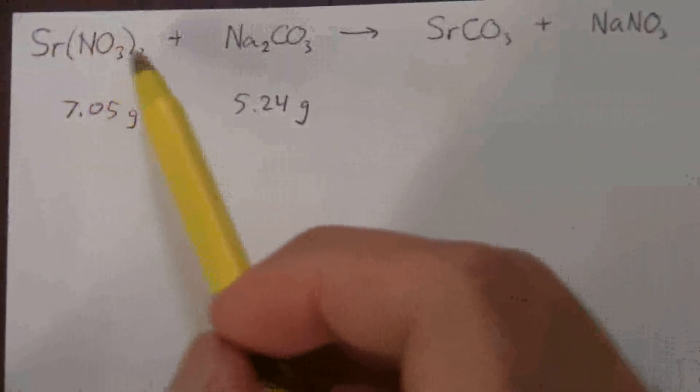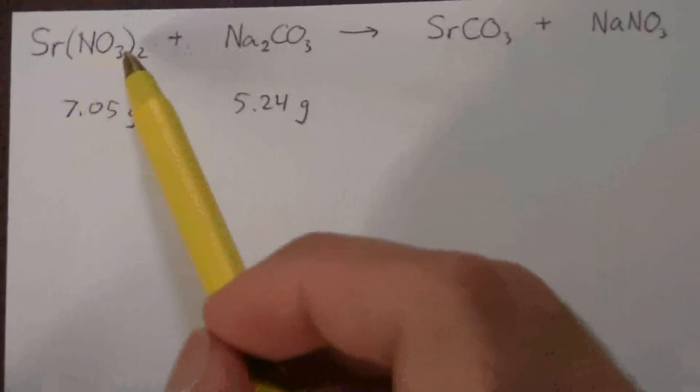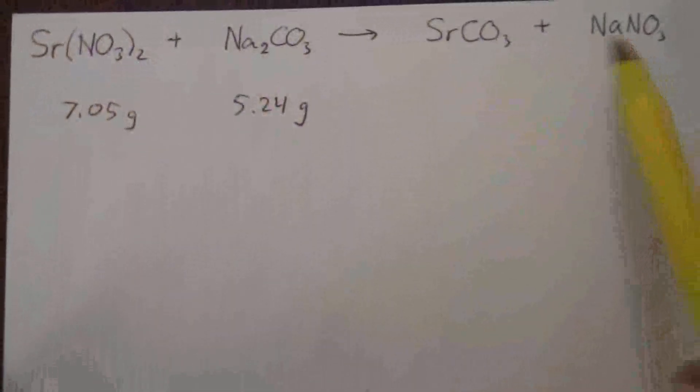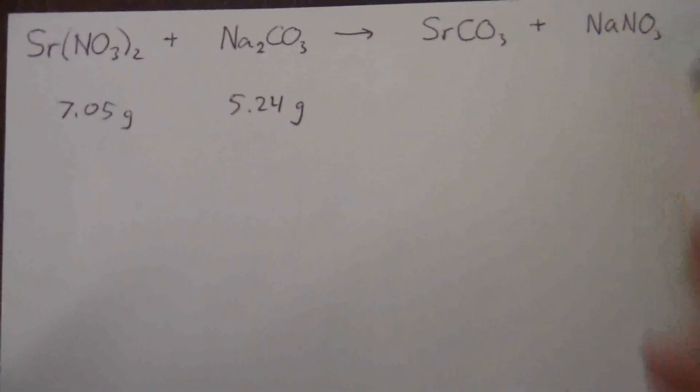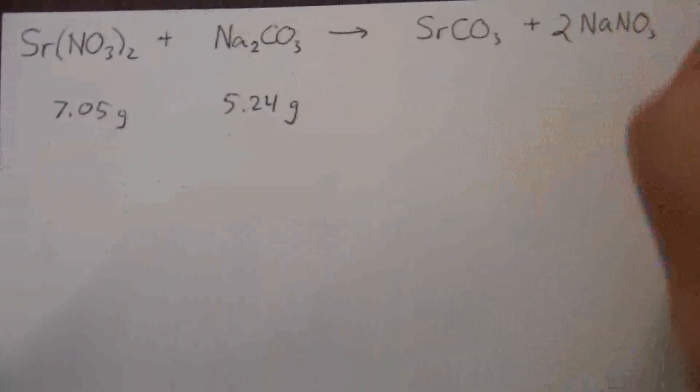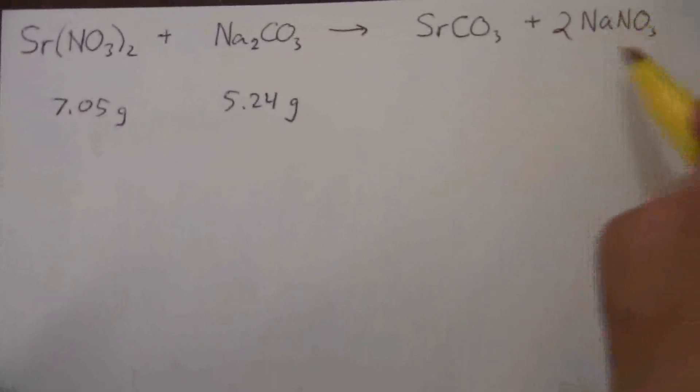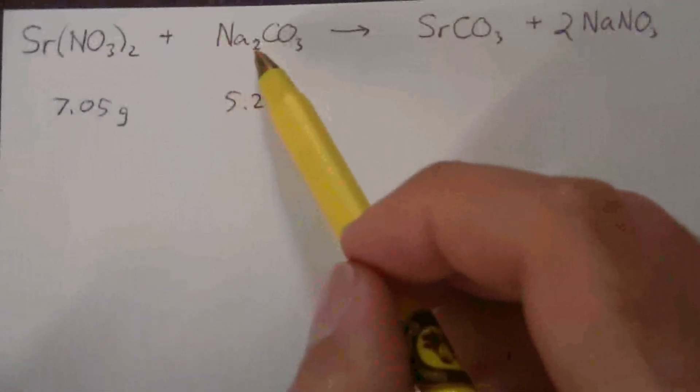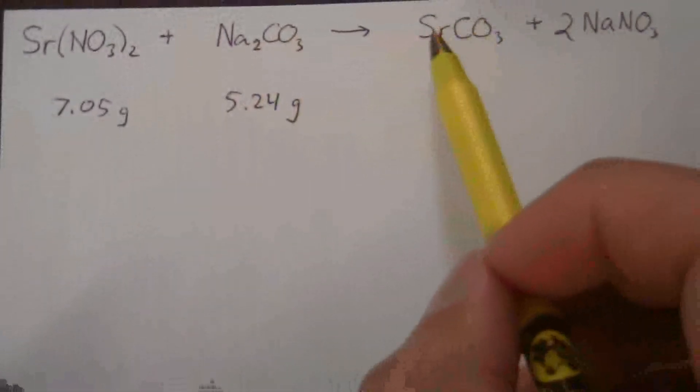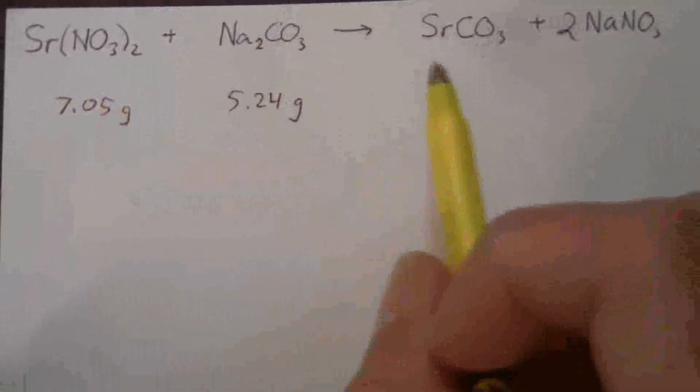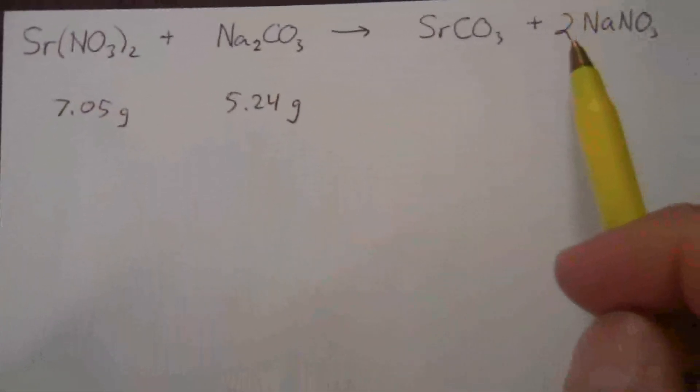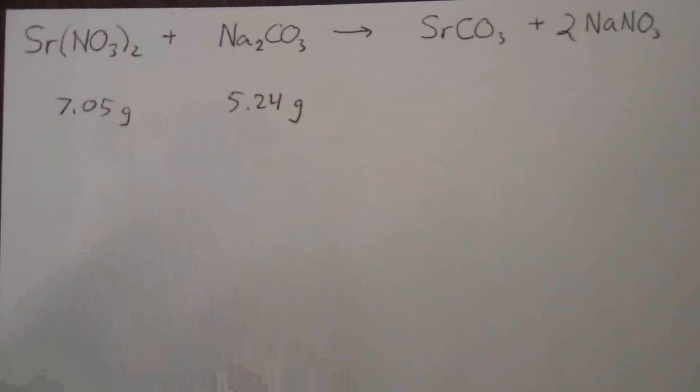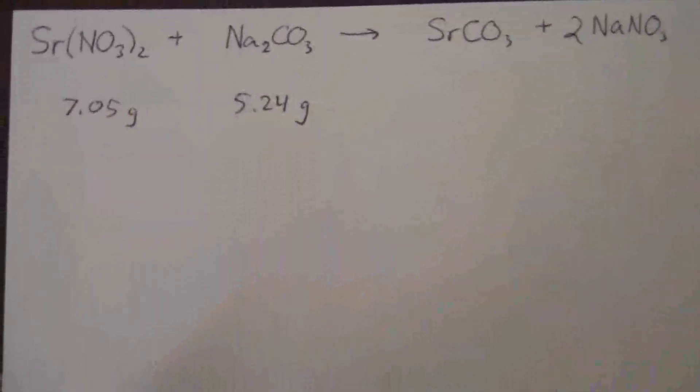So we always balance our chemical equation. And here we notice that we have two nitrate ions, so over here we need two as well. And we only have one, so I put two of these. Now I have two NaNO3, so that gives me two nitrate ions to balance, and it also gives me two sodium ions. Well, I have the two sodium ions there and I just double check my carbonates and the strontium. They are balanced as well. So all I needed to do was put a two in front of that NaNO3, sodium nitrate. And that is a balanced equation.